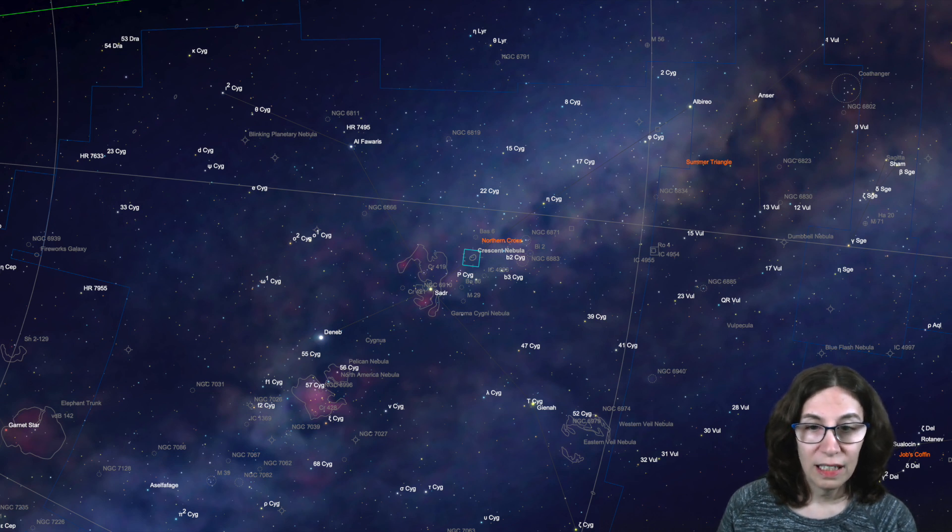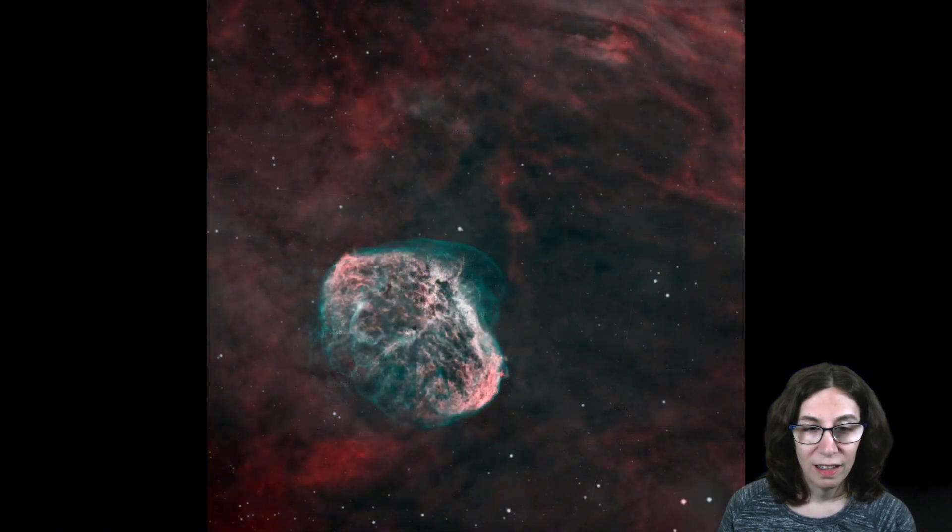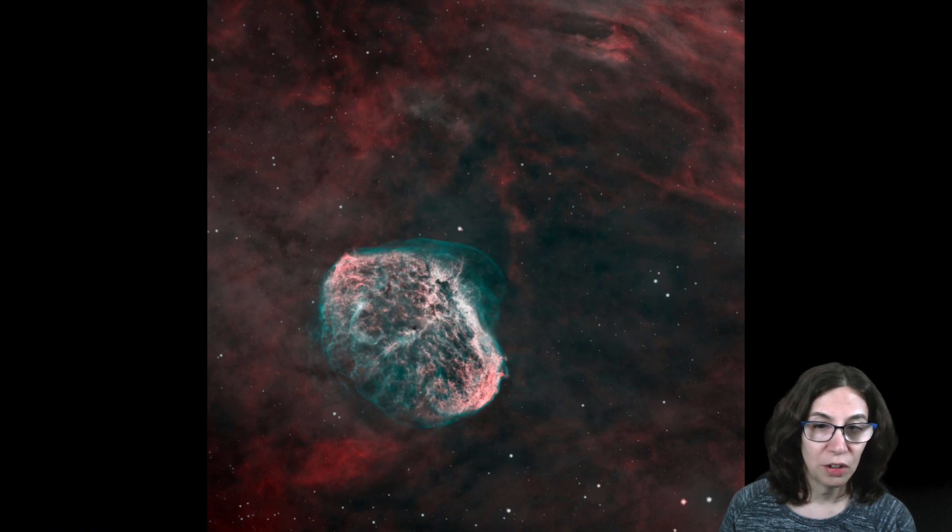The nebula is 5,000 light years away and only has an apparent size of 18 by 12 arc minutes. Here's my image from fall 2021.